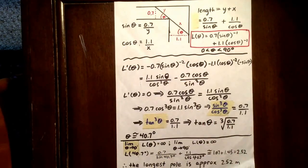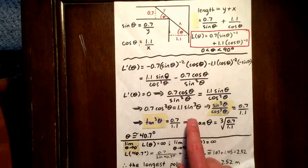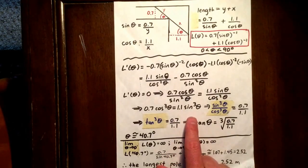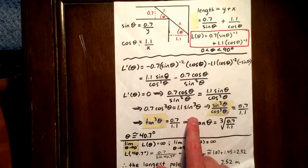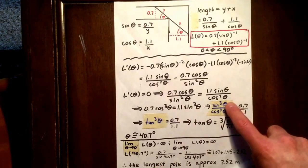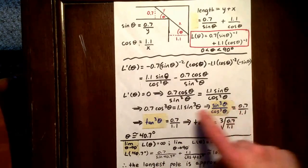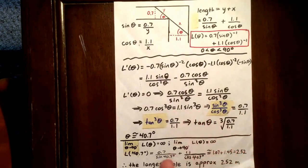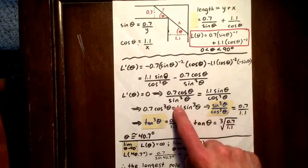And then we can divide each side by 1.1 and divide each side by cos cubed theta. What that does is it gets us sine cubed theta over cos cubed theta, and it gets us 0.7 over 1.1.